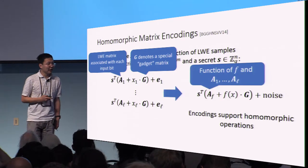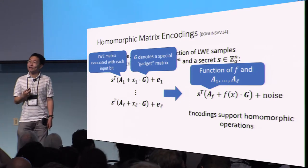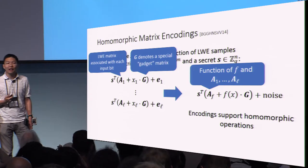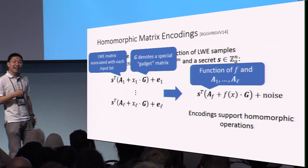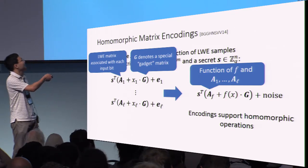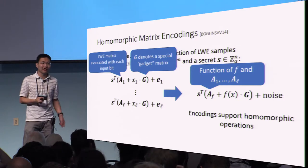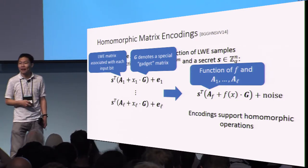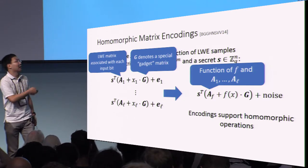The homomorphic property of the encodings is the following. Given an encoding of an input x, we can derive from it a new LWE encoding of any function F on x. This new encoding will be with respect to a new LWE matrix A_F, where A_F can be computed as a public function of just the function F as well as the public matrices A_1 through A_L — it does not in particular depend on the value that is being encoded.